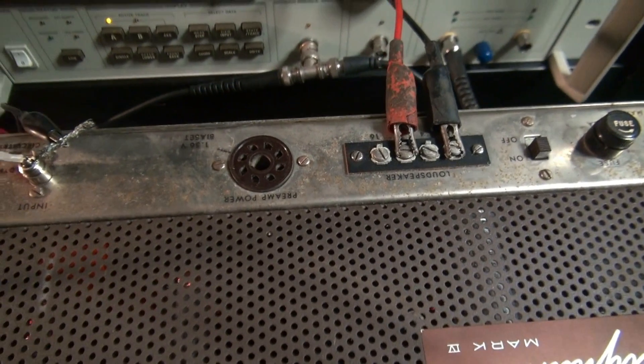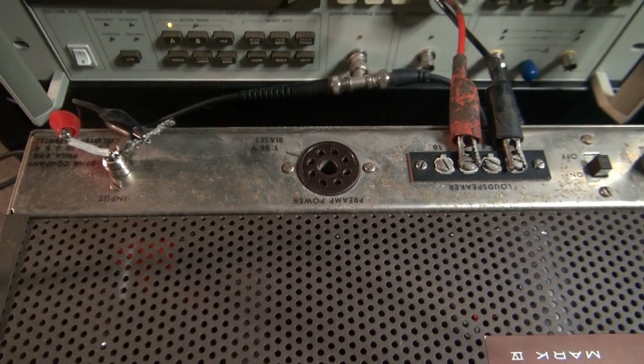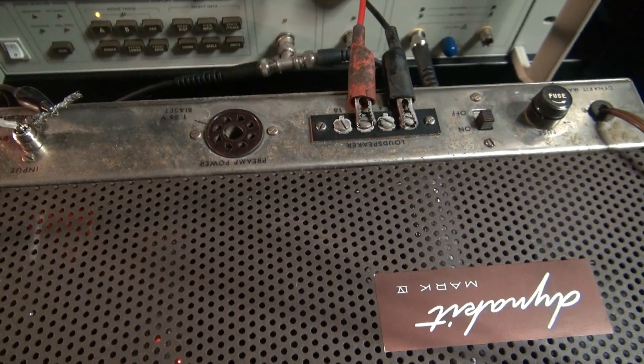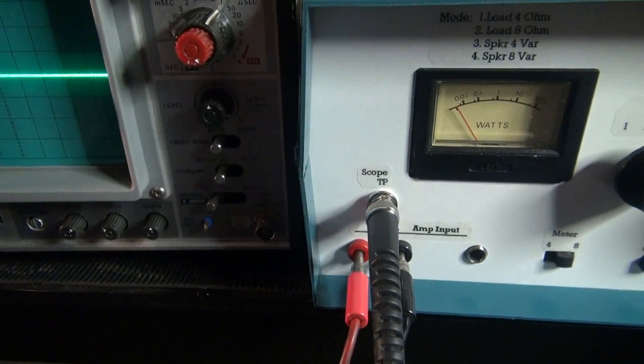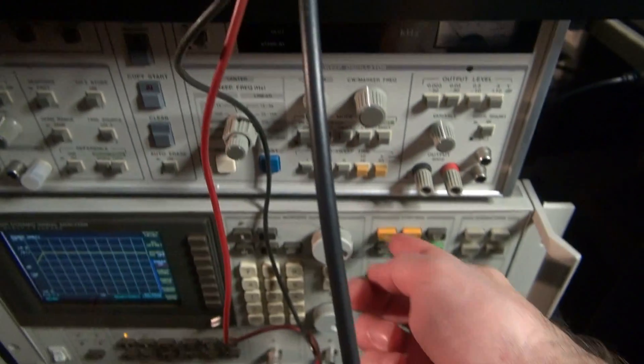Here's the Dyna kit. Now remember, this amp doesn't have any volume controls or tone controls, so I can only do the one sweep. First off, we'll just look at the scope and we'll watch the power output on the meter. Hit start.